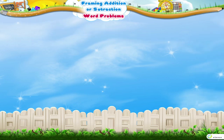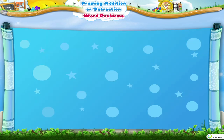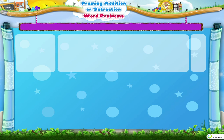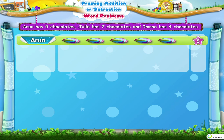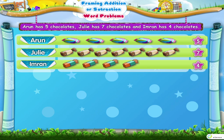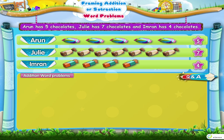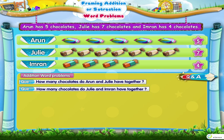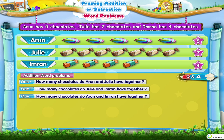Let us read the information and frame three addition word problems. Arun has five chocolates, Julie has seven chocolates and Imran has four chocolates. Frame three addition word problems: How many chocolates do Arun and Julie have together? How many chocolates do Julie and Imran have together? How many chocolates do Arun and Imran have together? Now, in the same information, frame three subtraction word problems.